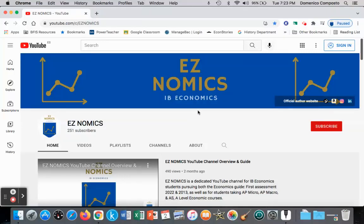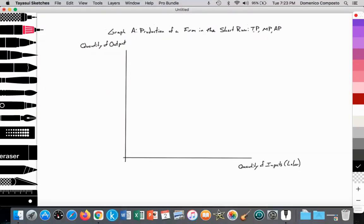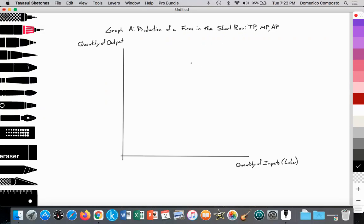Hello, this is Domenico with EZNomics, and this will be a short video looking at how to draw a production of a firm in the short run, looking specifically at total product, marginal product, and average product. There's another video that will accompany this that provides a full analysis. The intention of this video is just a guidance on how to draw this model.